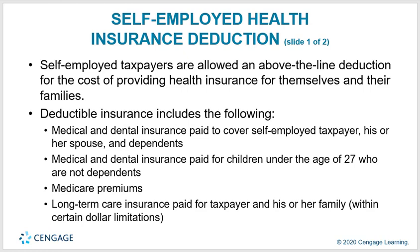Regarding the self-employed health insurance deduction, self-employed taxpayers are allowed an above-the-line deduction for the cost of providing health insurance for themselves and their families. Deductible insurance includes medical and dental insurance paid for self-employed taxpayers, their spouse and dependents, medical and dental insurance paid for children under age 27 who are not dependents, and medical premiums and long-term care insurance paid for the taxpayer and family within certain dollar limitations.